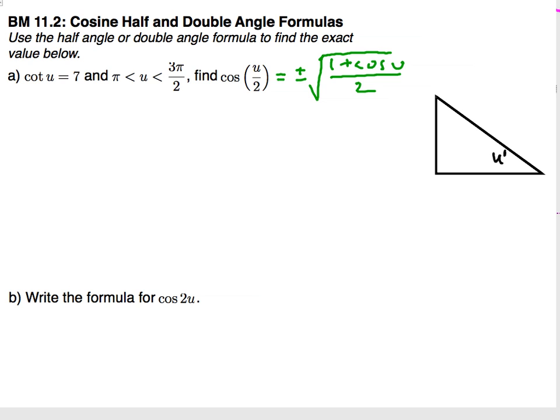All right, and welcome everyone to our next episode of Mr. Felstrom's Pre-CalcCast. Today's benchmark is 11.2, the cosine half-angle and double-angle formulas.